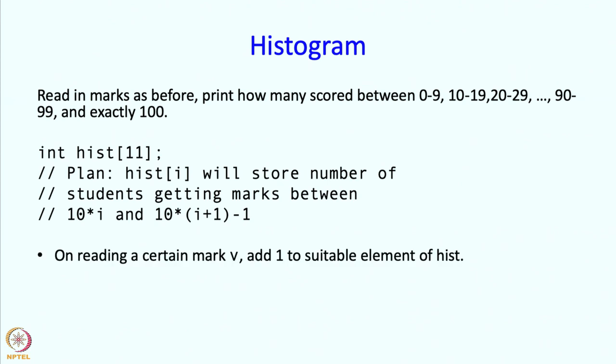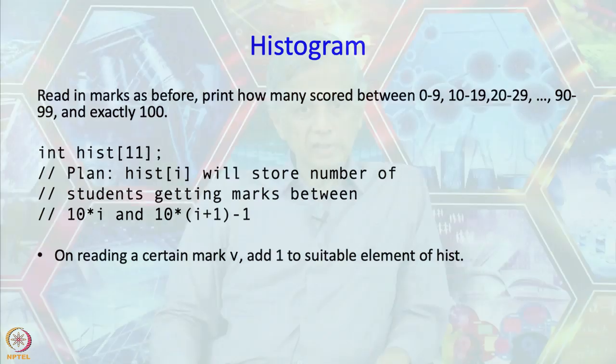So what should we be doing? If I read a certain mark from the keyboard, the user is going to type the marks. Then we have to decide which of these ranges it belongs to, and we are going to add 1 to hist of that i.